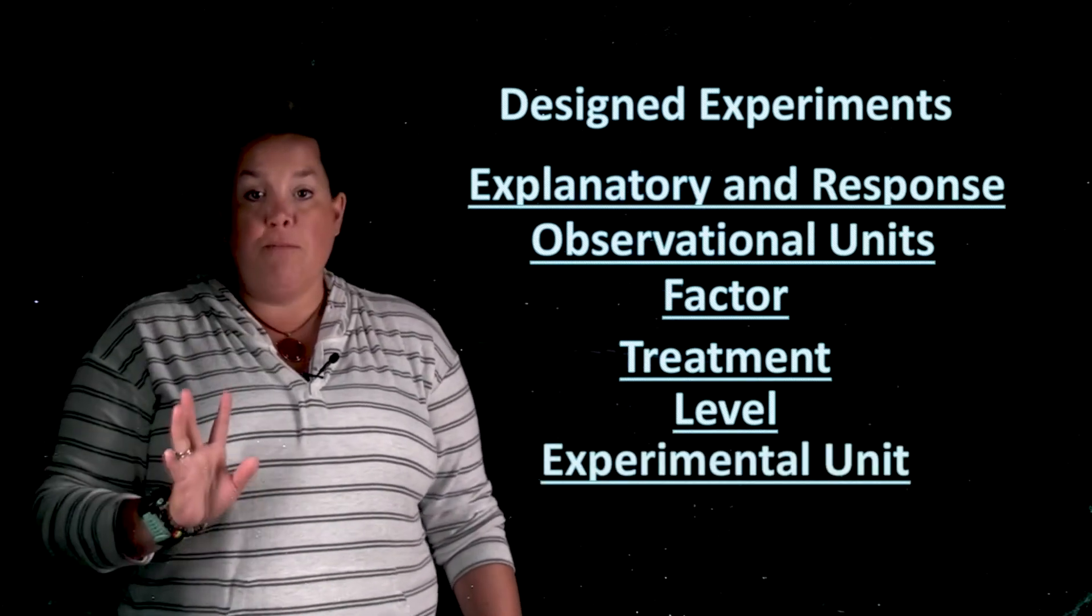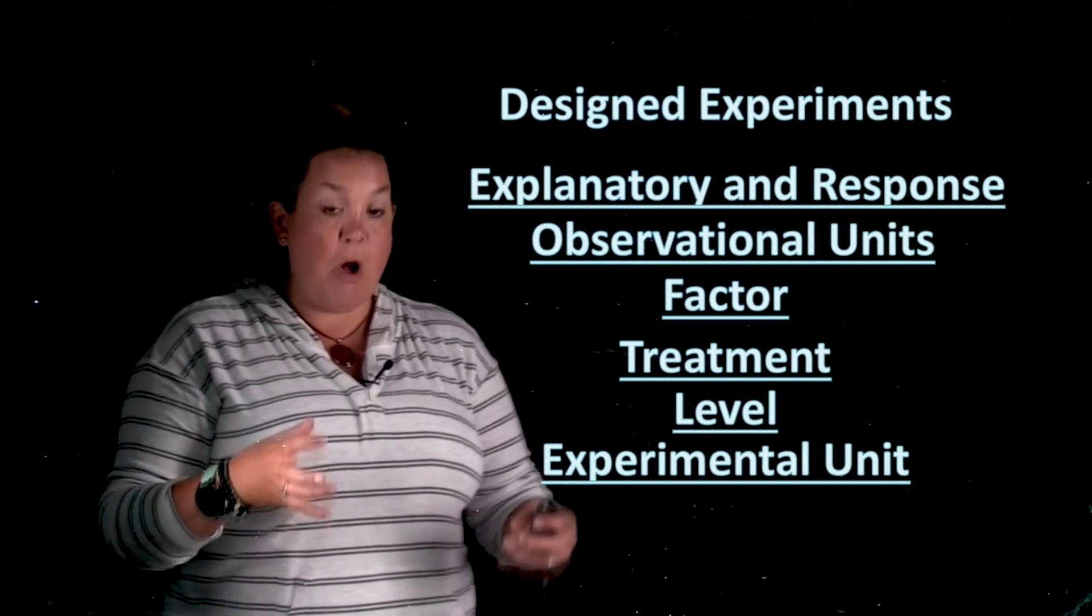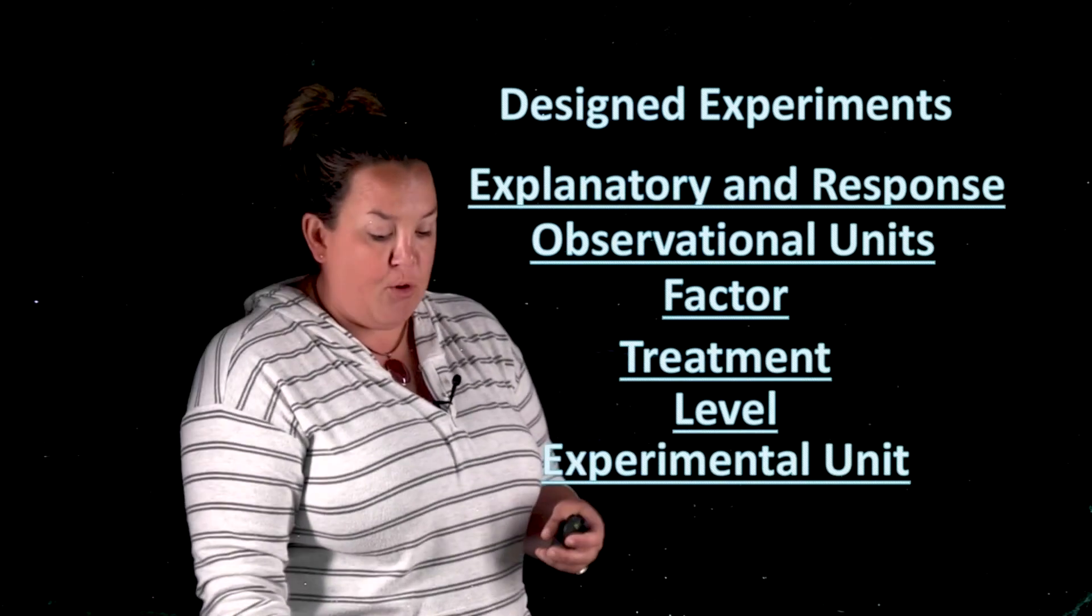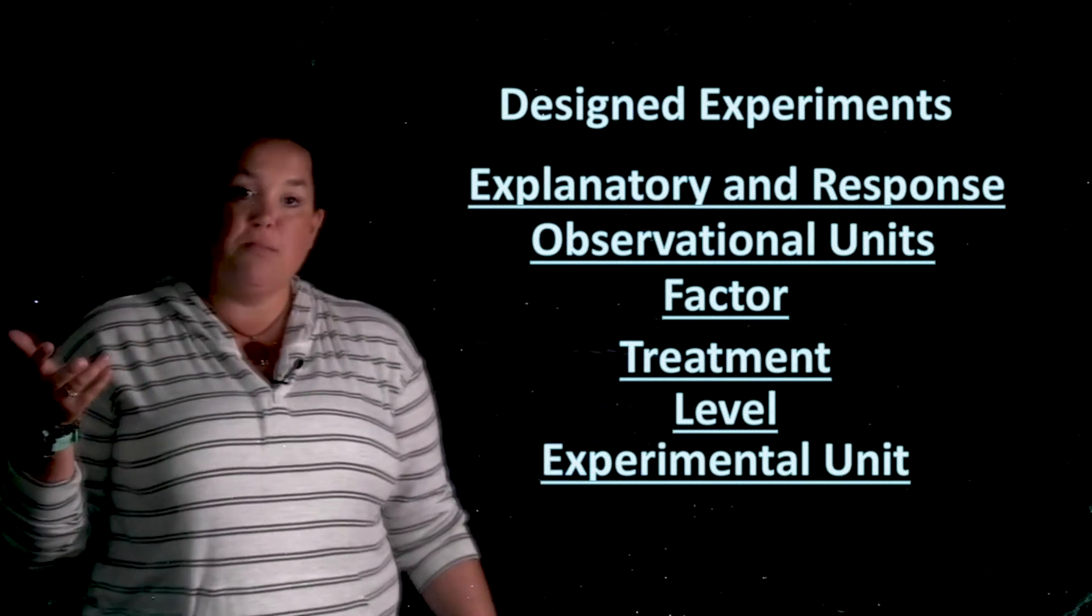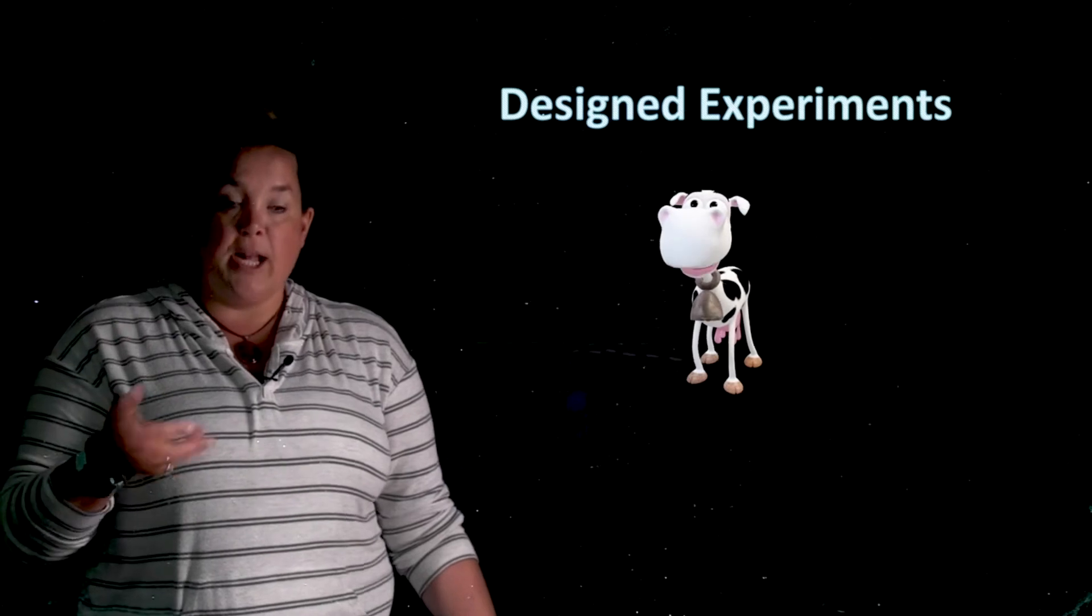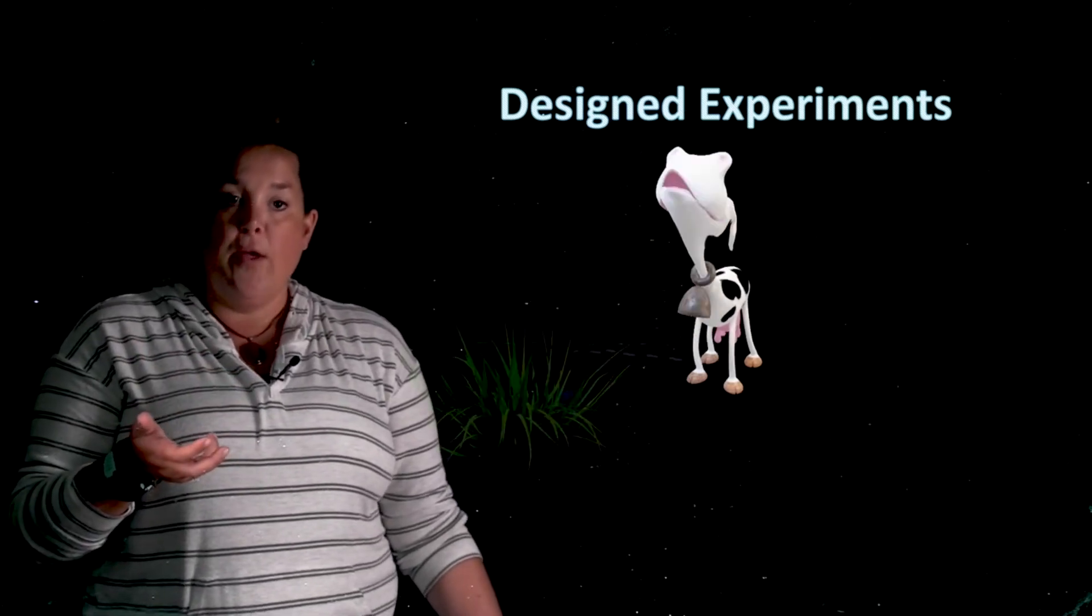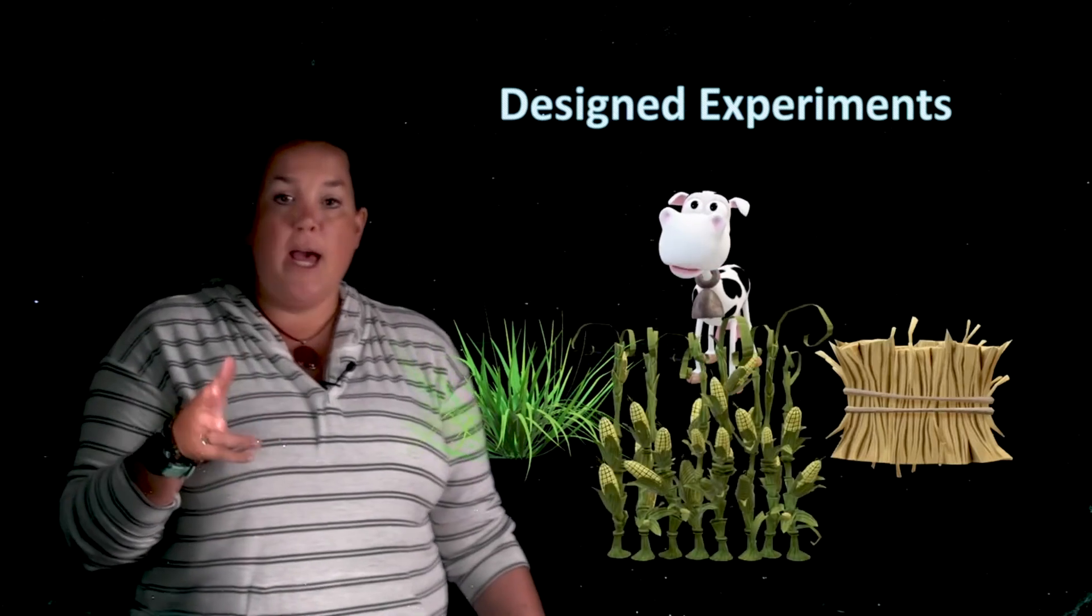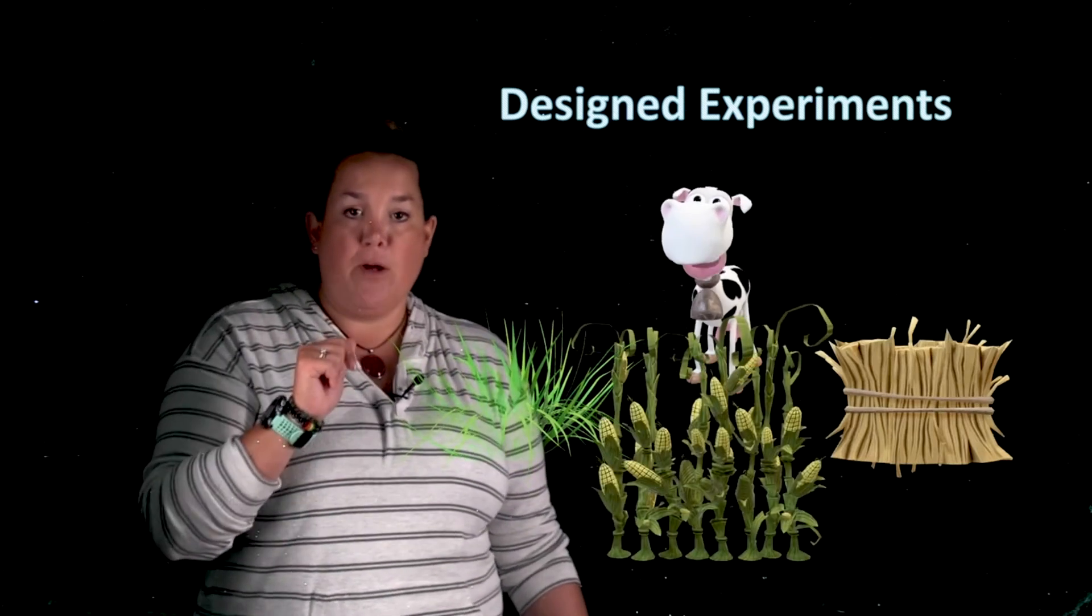And then the experimental unit is going to be the smallest group of observed units that you're studying or that are being assigned. Now let's practice thinking about those terms and how they're used by thinking about a cow and the different types of feed that it has and how it affects milk production.